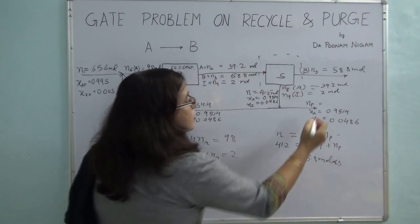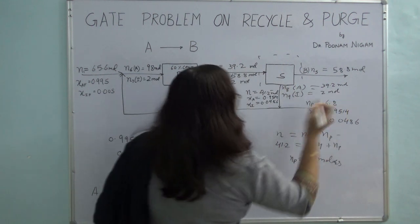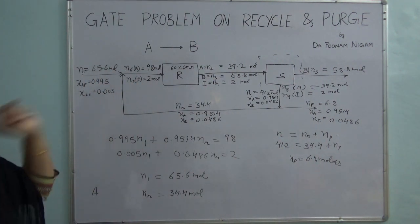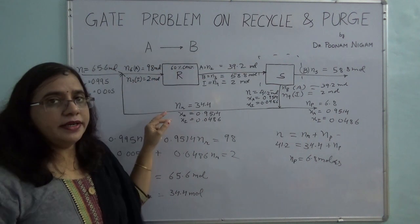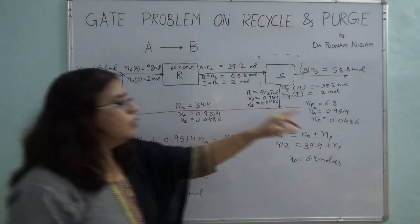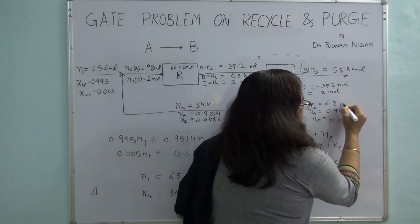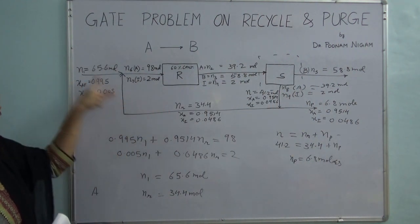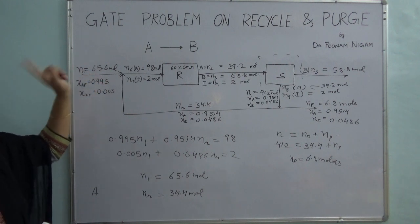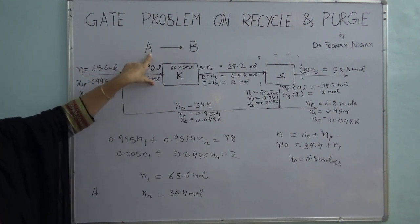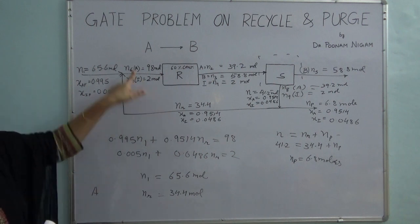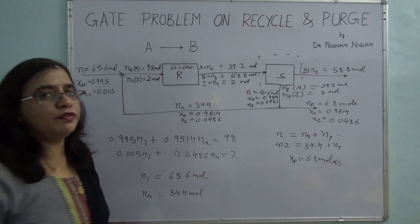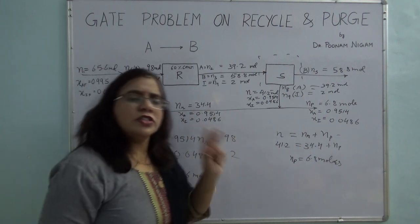I now have a balanced flow chart. The problem asks for the ratio of recycle to combined feed, which is NR / 100 = 34.4 / 100 = 0.344. The problem is solved.